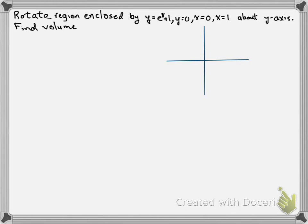We're asked to find the volume created by rotating the region enclosed by y equals e to the x plus 1, y equals 0, x equals 0, and x equals 1 about the y-axis. We'll start by drawing our graph of e to the x plus 1, which is the graph of e to the x shifted up by 1.